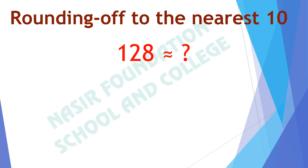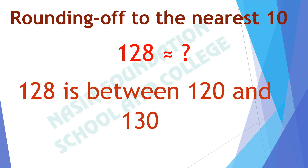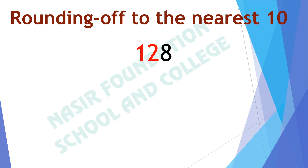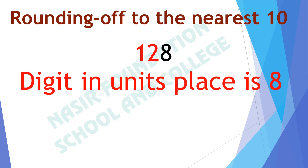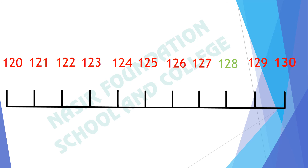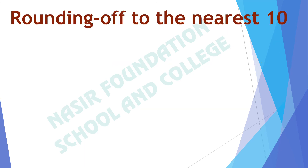The next number is in the hundreds: 128. We apply the same rule. 128 is between 120 and 130. The digit in its unit place is 8, and 8 is greater than 5. On the number line from 120 to 130, 128 lies nearer to 130. So we can say that 128 is nearly equal to 130.